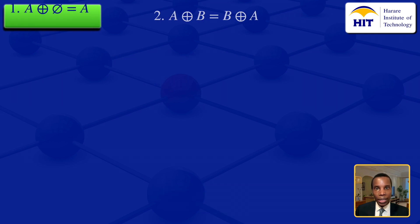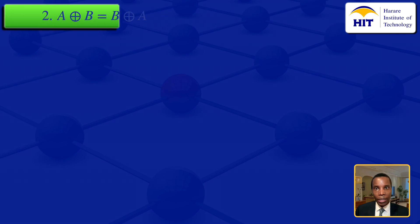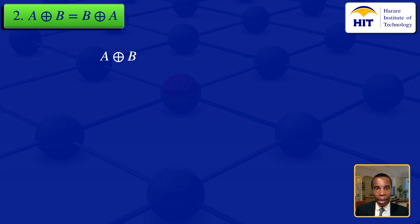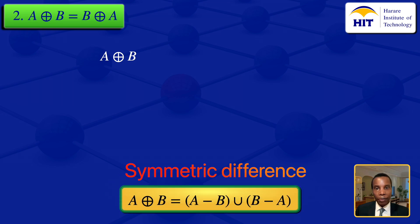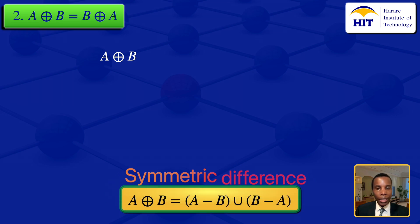I now move on to the second question: the symmetric difference of A and B. I'll start by writing the left hand side, the symmetric difference of A and B. By definition, that's the set difference of A and B union the set difference of B and A, so I can write that as my right hand side.